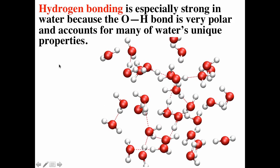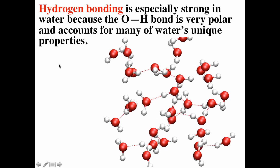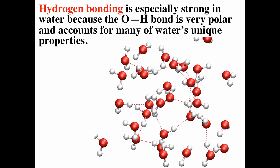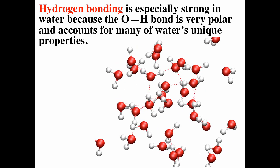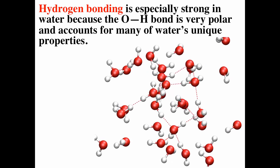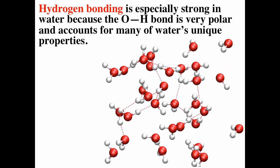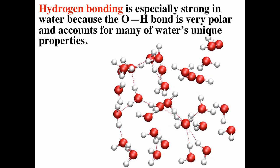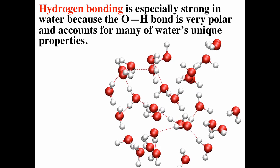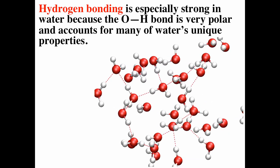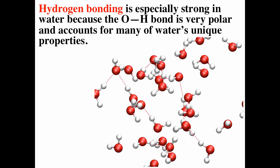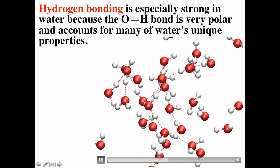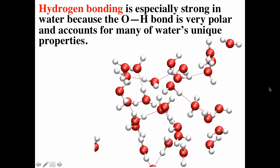This simulation of liquid water shows molecules rotating, vibrating, and moving. One second of the movie represents less than a picosecond in real time. The red dashed lines represent hydrogen bonds, which are constantly being formed and broken. Hydrogen bonds are around 20 kJ/mol, whereas the covalent O–H bond is typically around 200 kJ/mol.